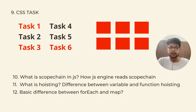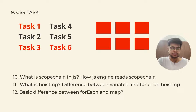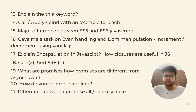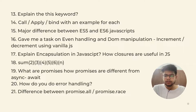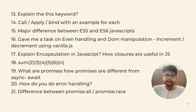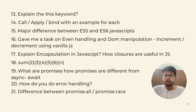Question 10: what is scope chain in JavaScript and how does the JS engine read the scope chain? What is hoisting and what is the difference between variable hoisting and function hoisting? The basic difference between forEach and map? Question 13: explain the 'this' keyword - a very common question. Then call, apply and bind - he told me to explain the 'this' keyword in that context as well and show some examples.